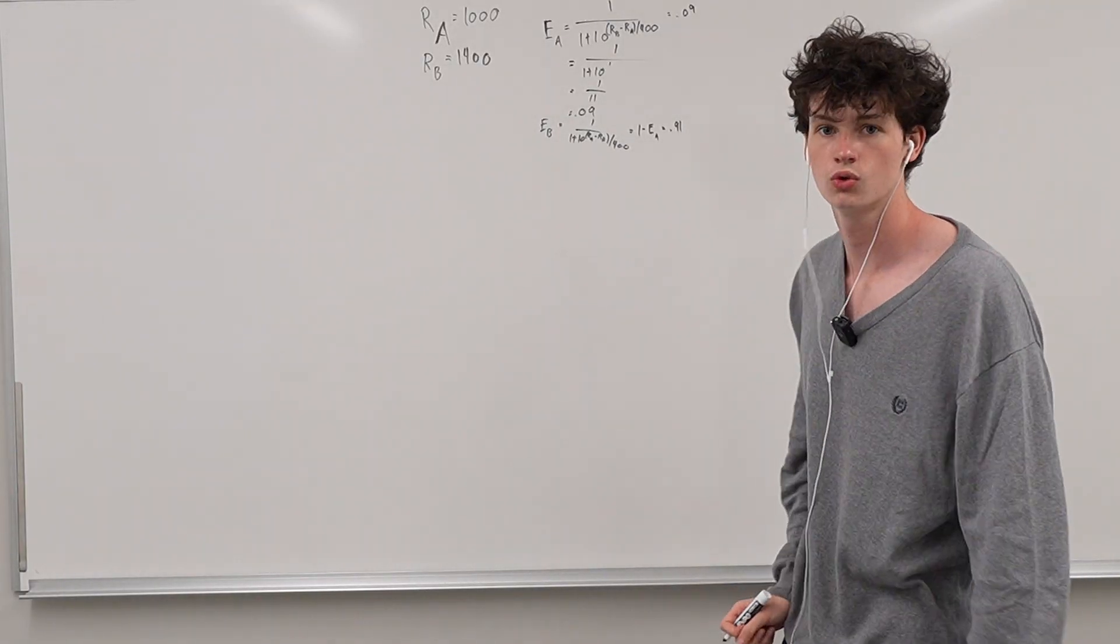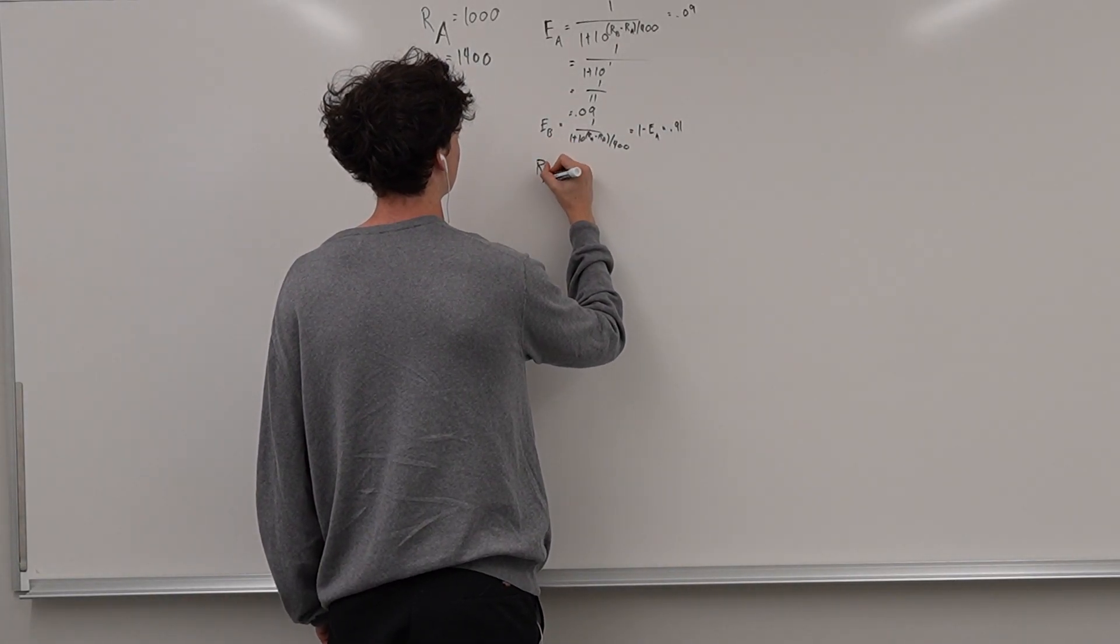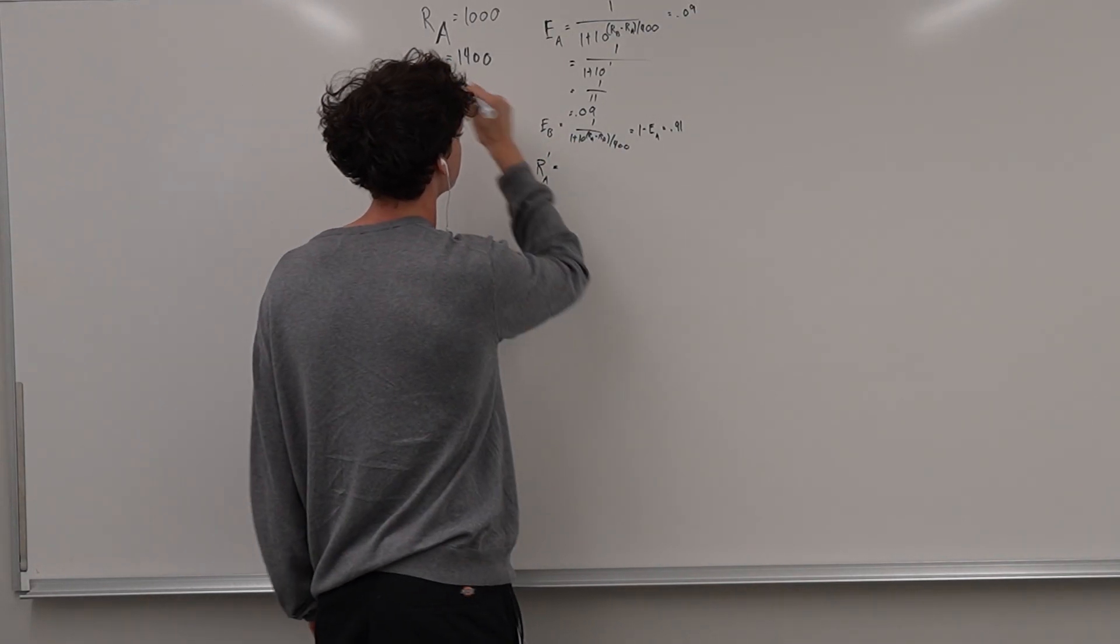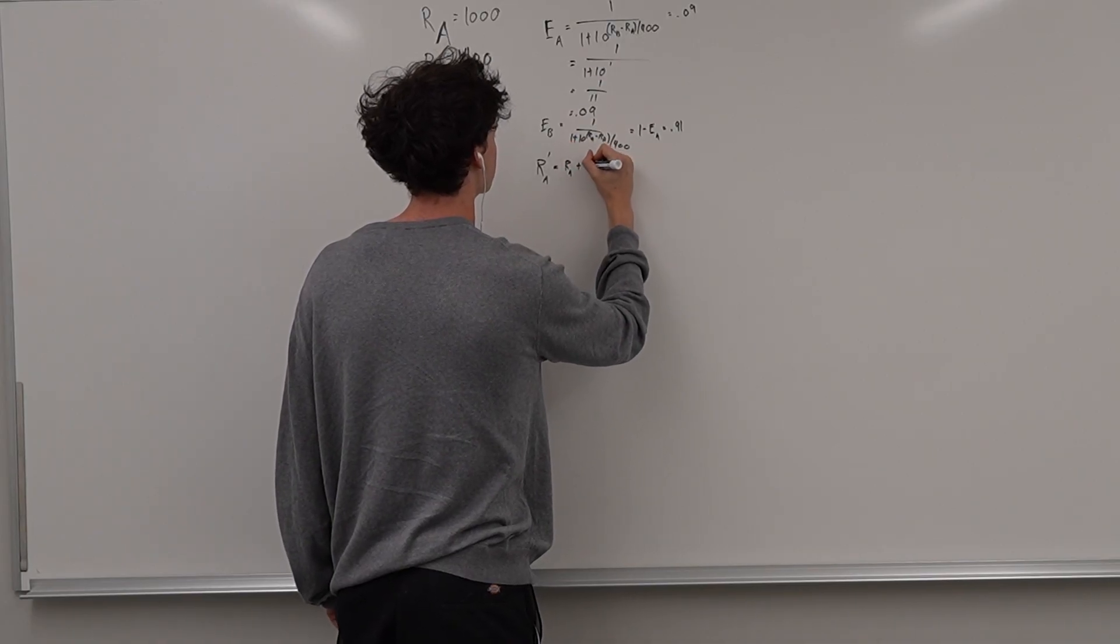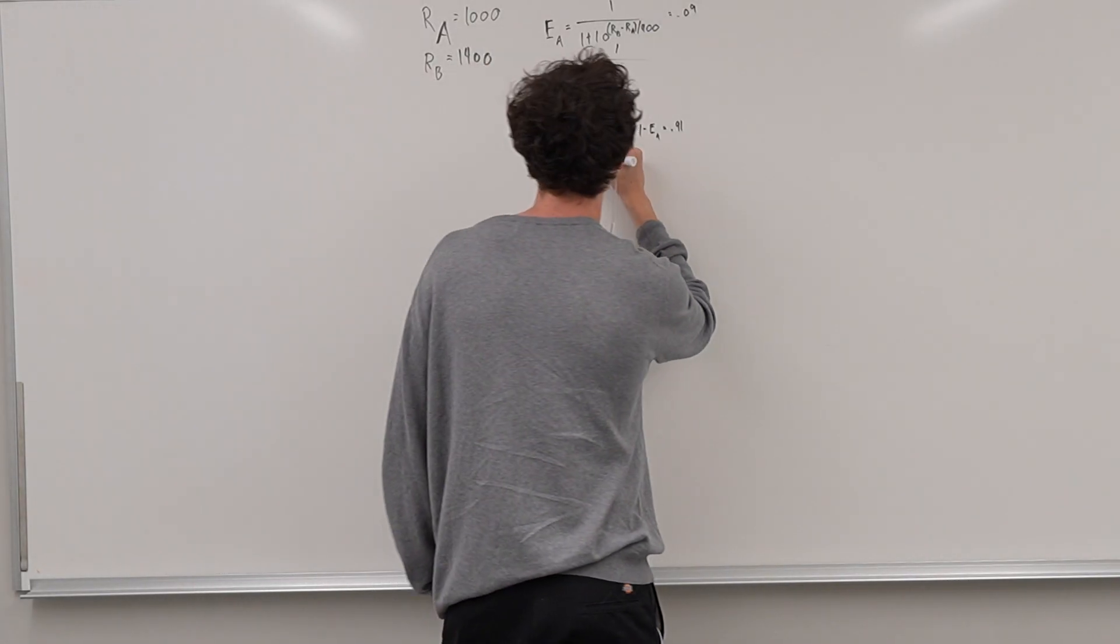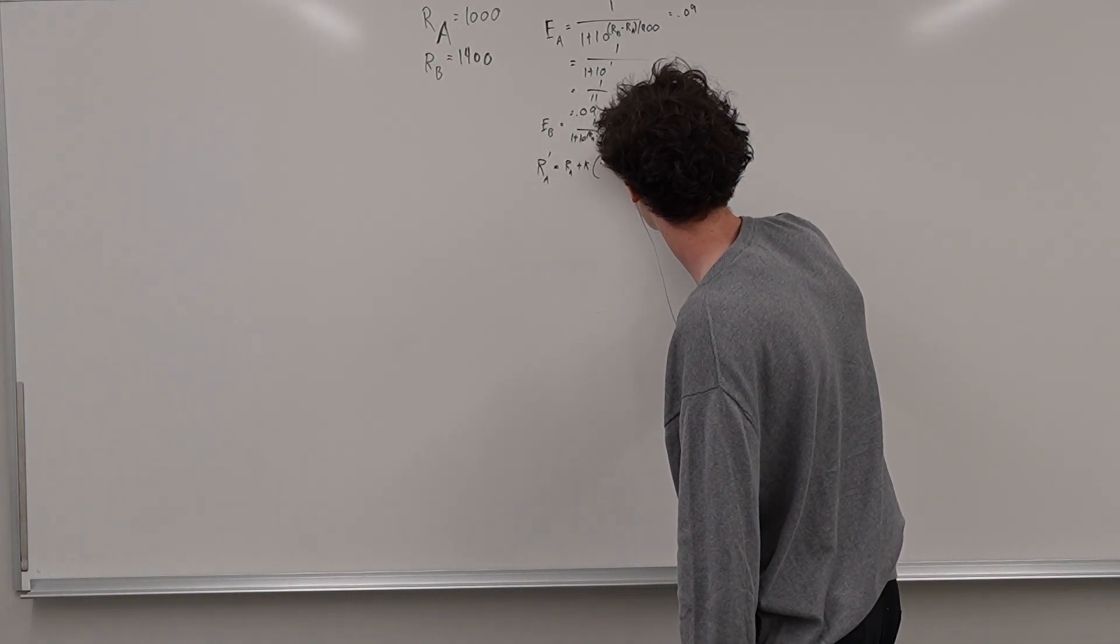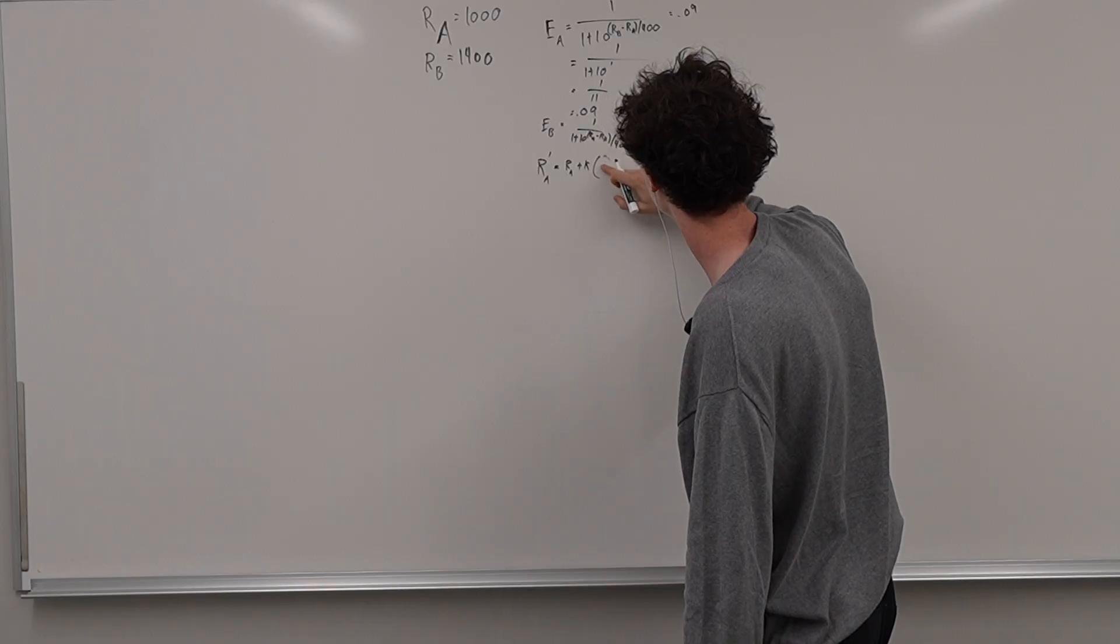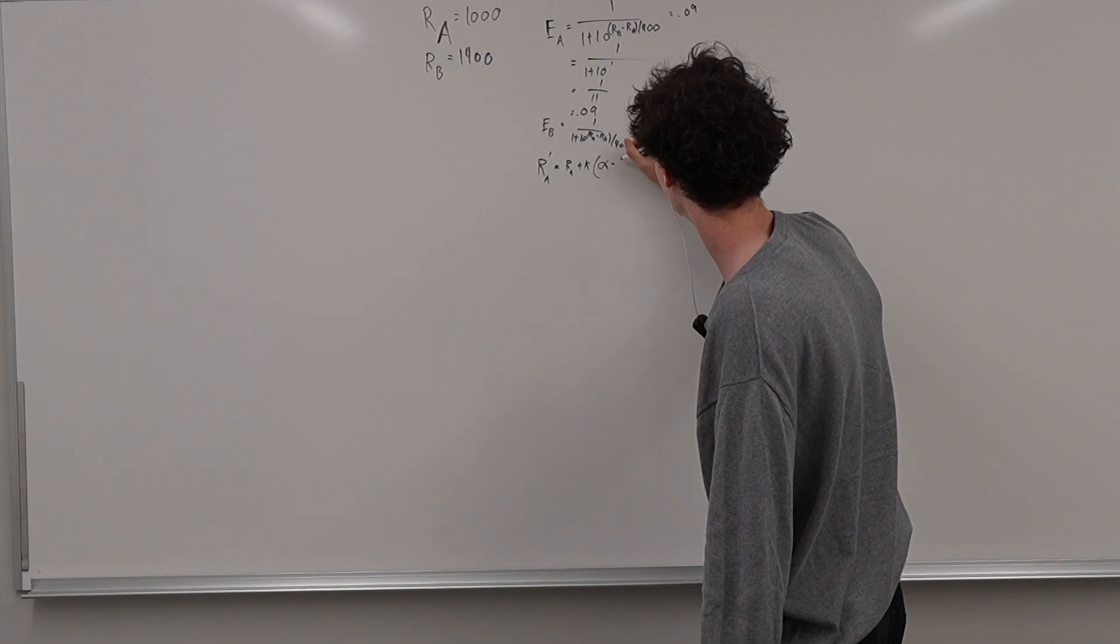Well, we need to update each person's ratings. So how do we update that? There's another formula. So we'll call this RA prime. So if we're updating this person's rating, it's going to be their original rating plus some k factor. So this is like an arbitrary constant that I'll talk about later, but it's going to be some k factor times the actual outcome of the game. We'll call it S or we can call it alpha. It can be fancy. Alpha minus the expected.